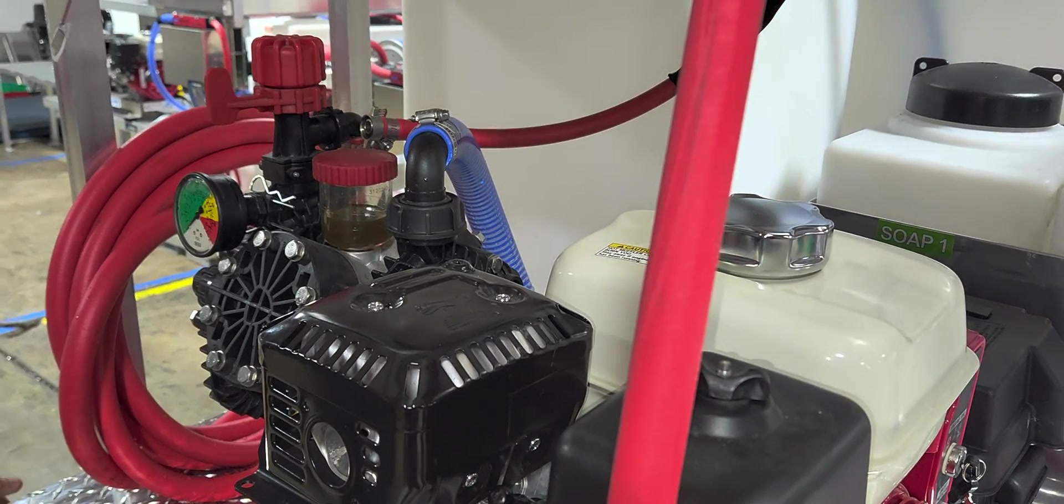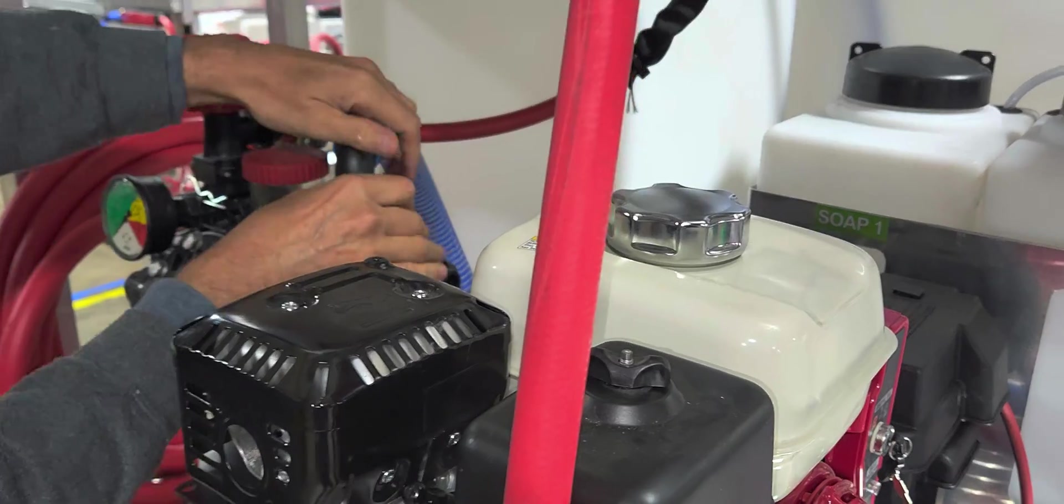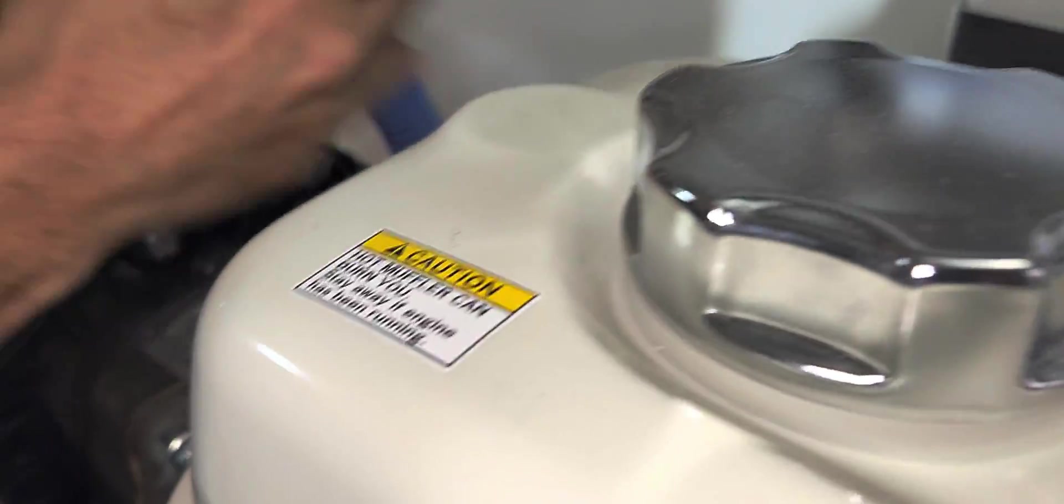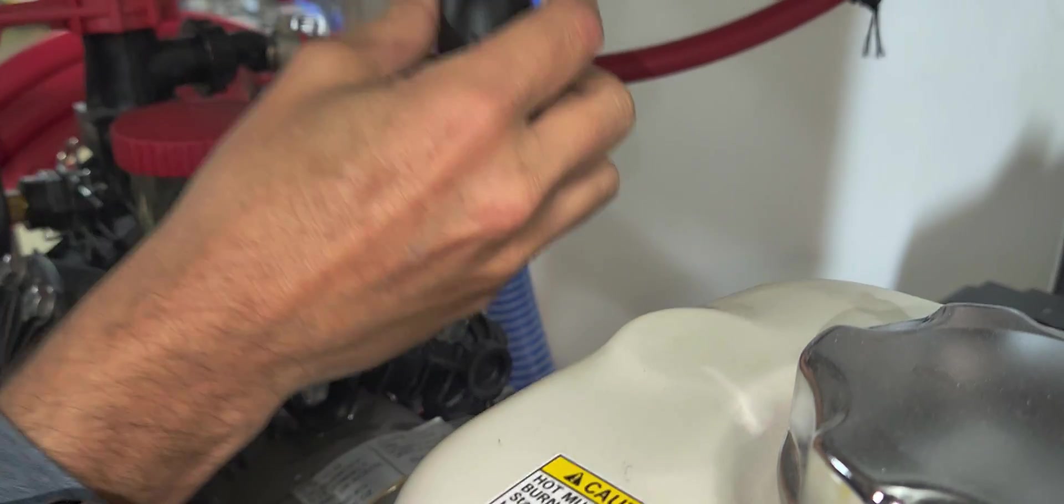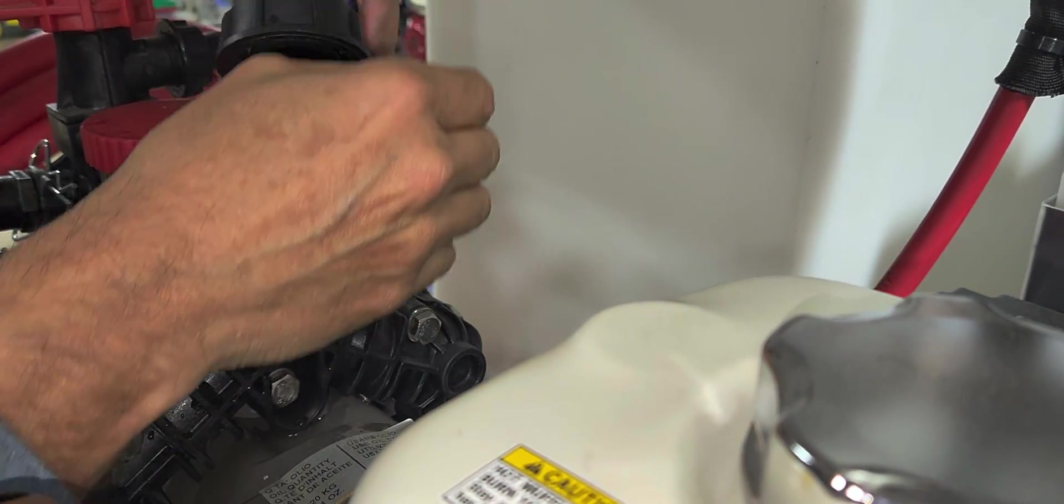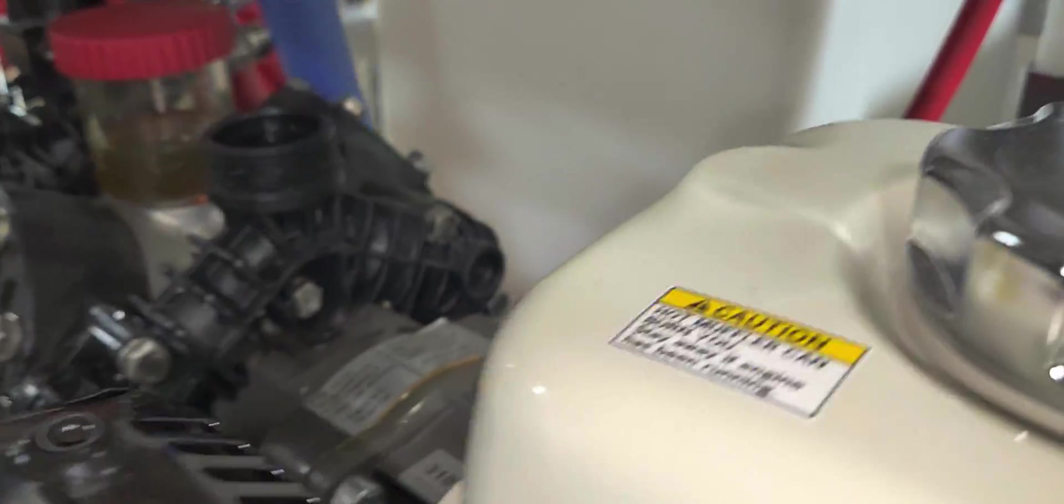Once you've cleared all of your lines, to winterize the pump, disconnect the inlet and lay this hose down so if there's any water in there, it'll run out. And you can take your RV winterizer.